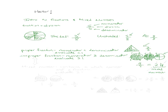So let's take a look at that mixed number. By definition, a mixed number has two components: a mixed number contains a whole number as well as a fraction. Looking back at our example, the 2 would be the whole number component and the quarter would be the fractional component. Because a mixed number is the same thing as an improper fraction, a mixed number is going to evaluate to be greater than or equal to 1.